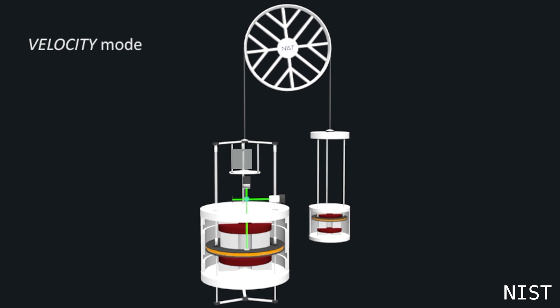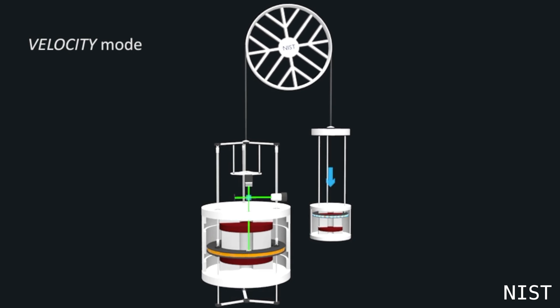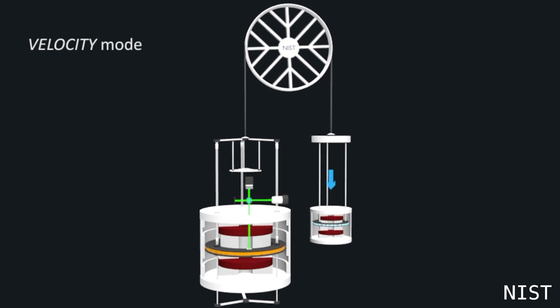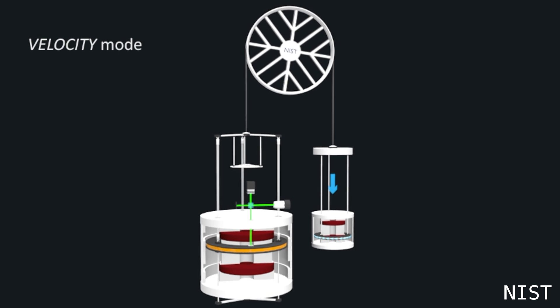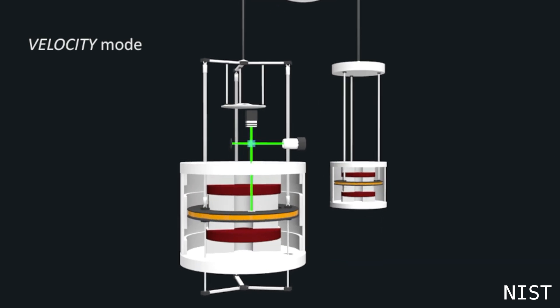In velocity mode, the mass is lifted off the mass pan, and the current is turned off. But B and L are the same. Now this is where the other side of the balance comes into play. A motor on the right side moves the coil through the magnetic field at constant velocity.